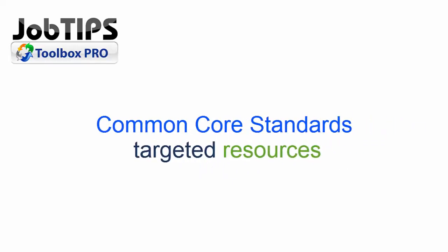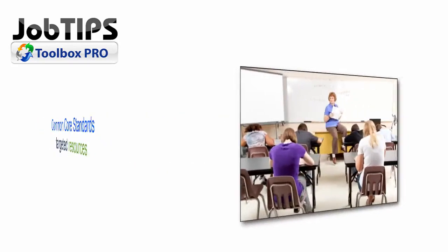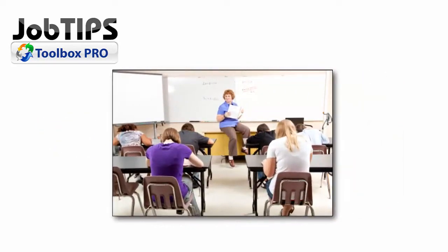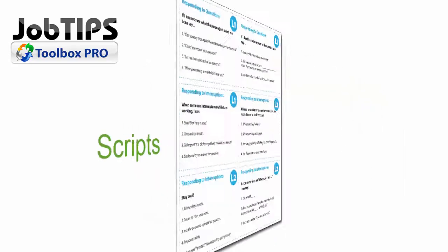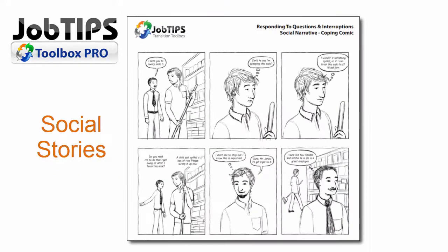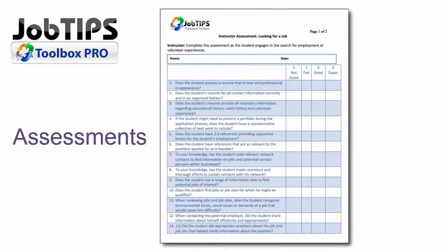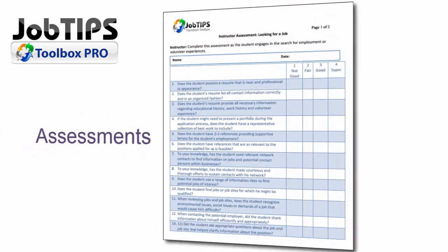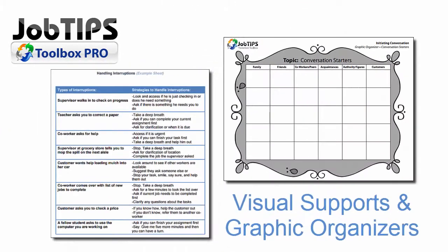Job Tips Pro is a suite of Common Core Standards targeted resources meant to be used in a classroom or group rather than self-directed learning. Its resources provide scripts to use in classroom practice, social stories for classroom examples, and other instructor-led assessments, visual supports, and graphic organizers.